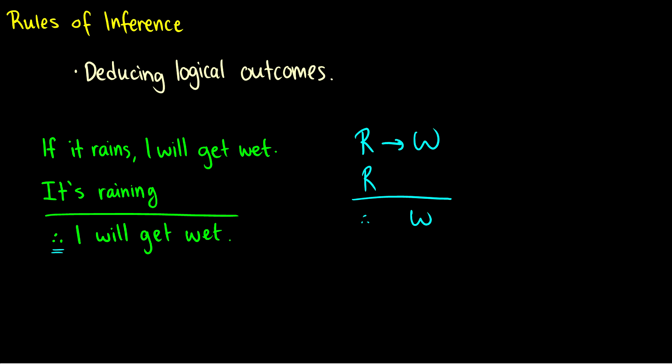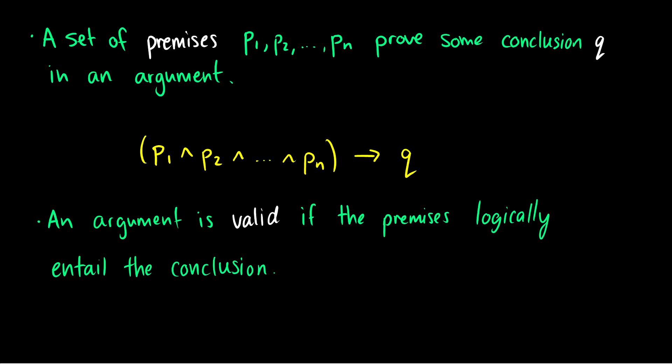So we take usually one or two premises and we can deduce a conclusion from them. So these are premises, and this is a conclusion. And there's a bunch of different rules of inferences. But more generally, we say that a set of premises P1, P2, all the way up to PN, prove some conclusion Q in an argument.